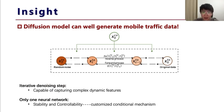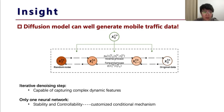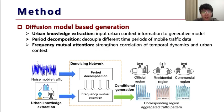Diffusion models use an iterative method for adding noise and denoising, controlling the Gaussian noise to achieve complex generation precisely. Moreover, different from traditional GAN networks, diffusion models only need to train one neural network, avoiding the mode-collapse issues, and have better controllability. So, our proposed method uses a diffusion generation model based on urban knowledge for generating network traffic.